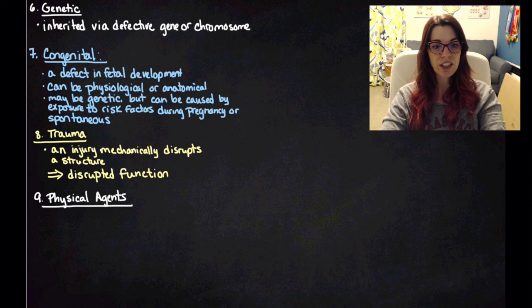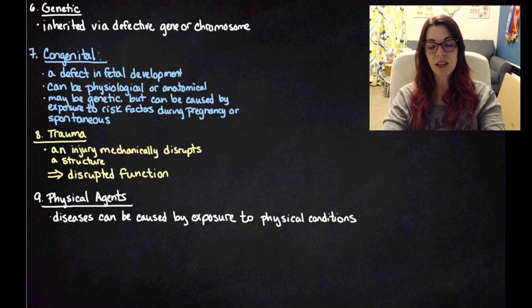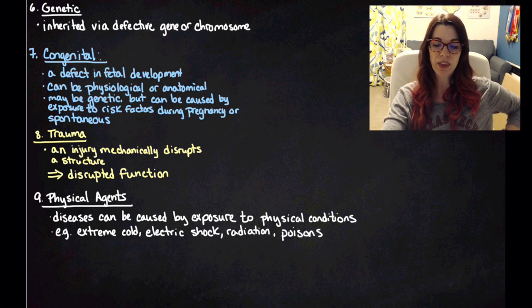Number nine is a physical agent. So physical agents, what does that mean? It means you have diseases that can be caused by exposure to physical conditions, typically environmental conditions. So for example, extreme cold, it can also be things like electric shock, exposure to radiation, or poisons in the environment.